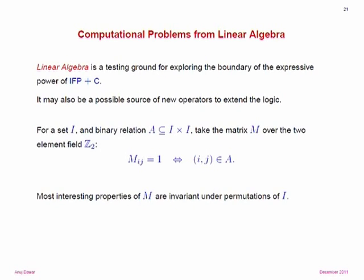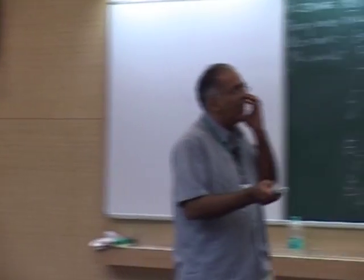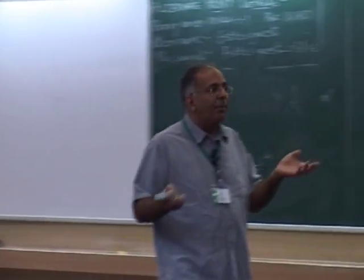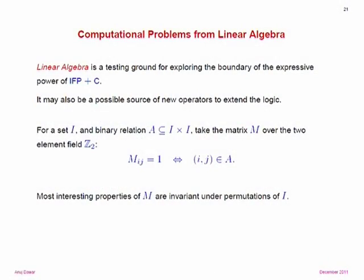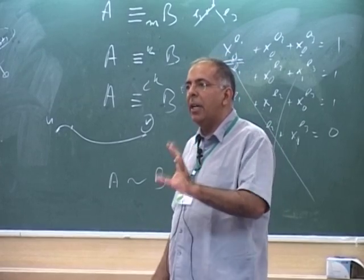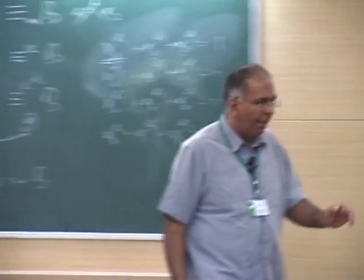This is simply because if you think of M as a linear operator on a vector space whose basis is given by I, most interesting properties of a linear operator don't depend upon a particular ordering of the basis. So we can ask natural questions about definability even when we think of I, the underlying domain, as being unordered.